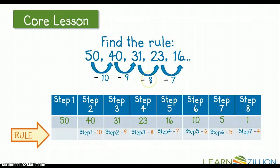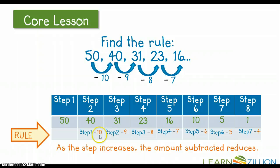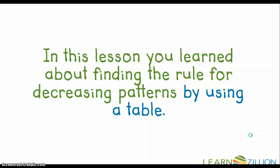I found a pattern here, but I can also find patterns within my numbers in my table. So as the step increases, the amount subtracted reduces or decreases, okay? So as my steps are getting, you know, I'm increasing my steps from 1 to 2 to 3 to 4 to 5 to 6 to 7 to 8, my amount subtracted is decreasing: 10, 9, 8, 7, 6, 5, 4. In this lesson, you learned about finding the rule for decreasing patterns by using a table.